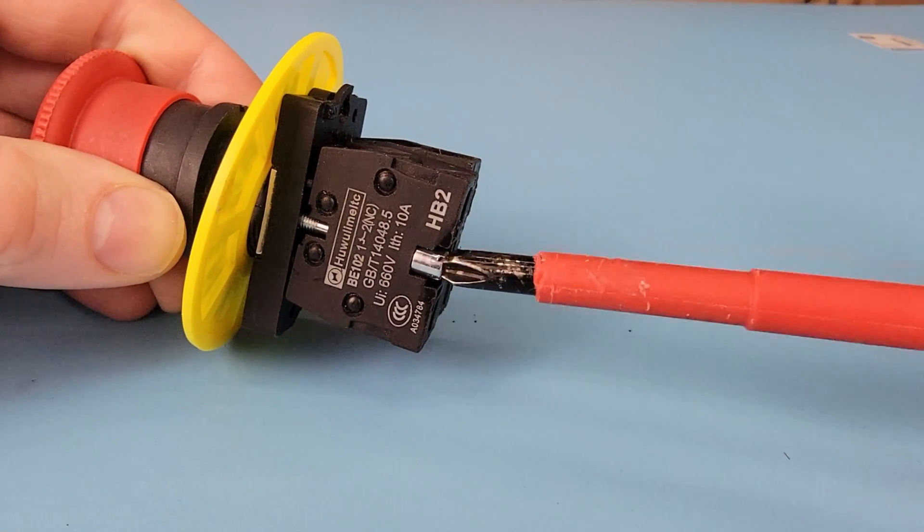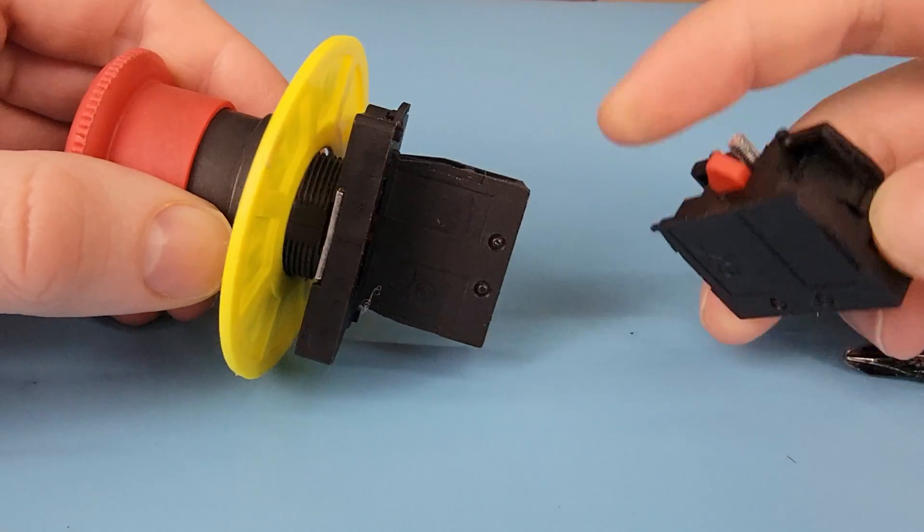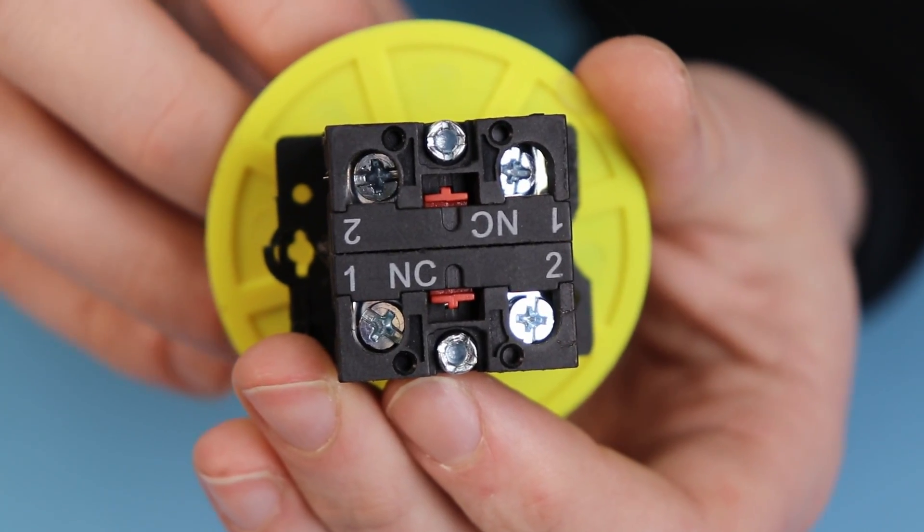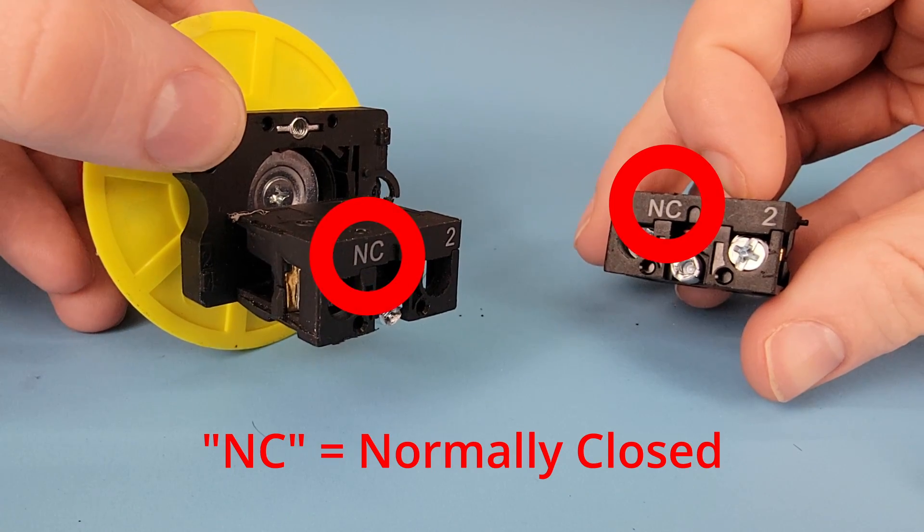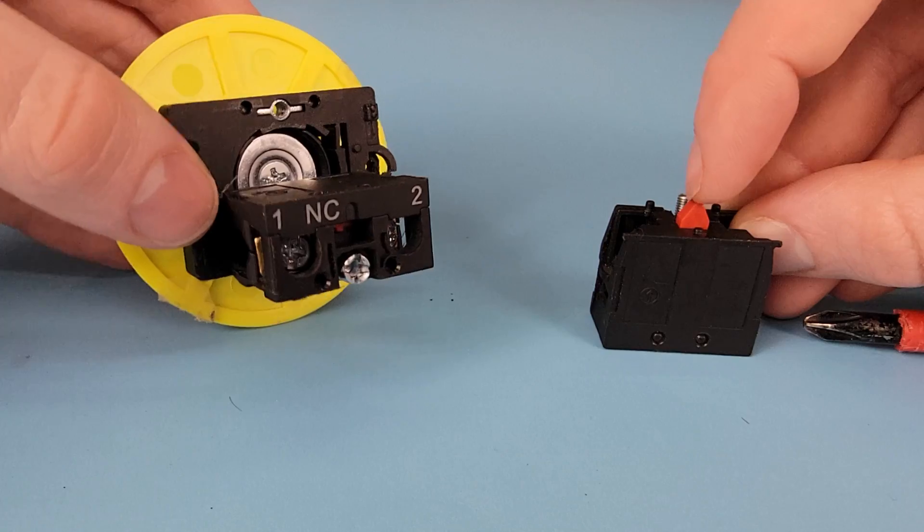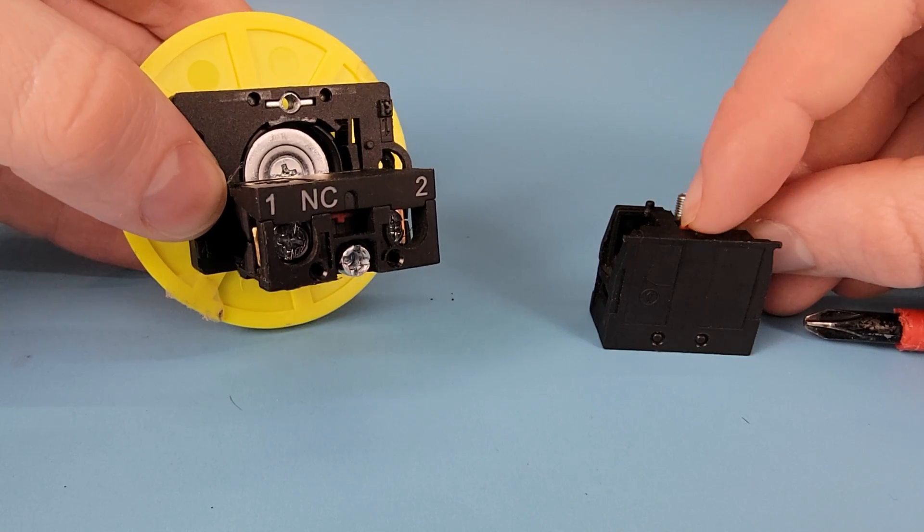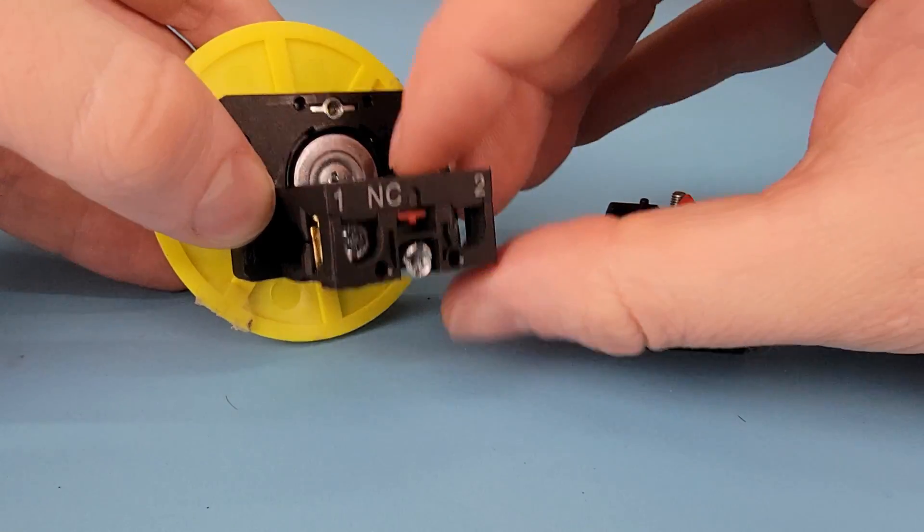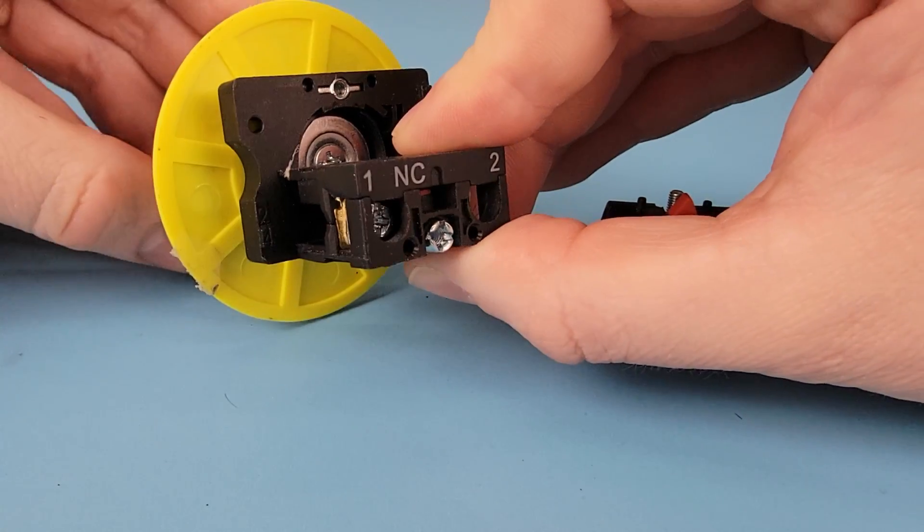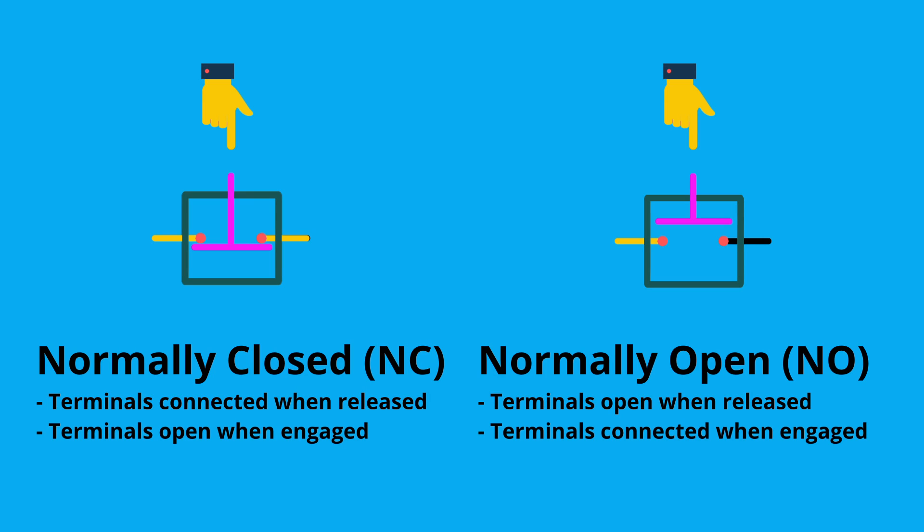Generally speaking, the emergency stop button comes with two switches. You'll see both these pieces on mine say NC, meaning they're normally closed switches. These two screw terminals are normally connected, but then when the emergency stop button is pressed, they open up. You can also buy normally open emergency stop buttons, which act in the inverse. Normally the switch is open and closed when the emergency stop button is engaged.